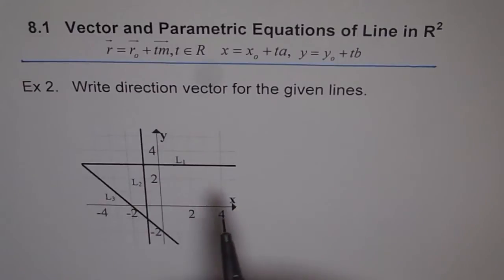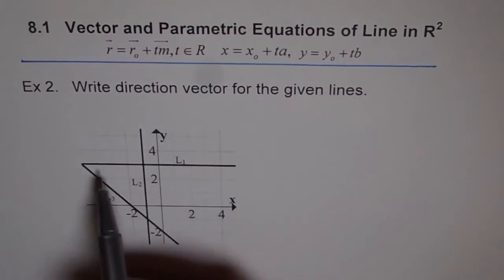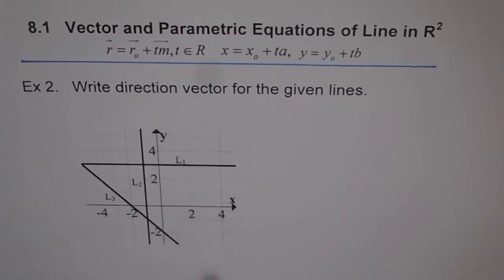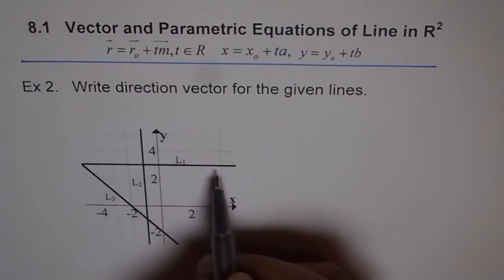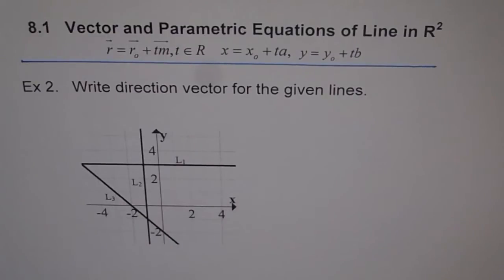So we have three lines here. If you notice, line L1 is the horizontal line. Now, the direction vector, as you have already seen in Example 1, we can represent all kinds of lines with our direction vector, whether they are horizontal, vertical or oblique.